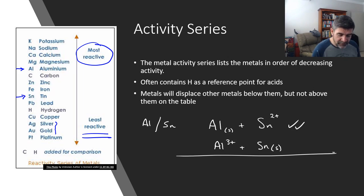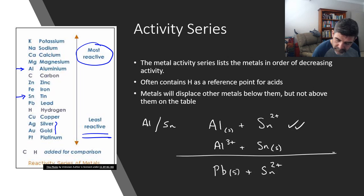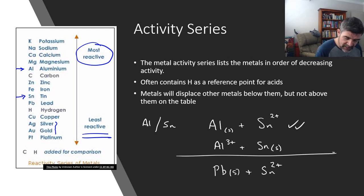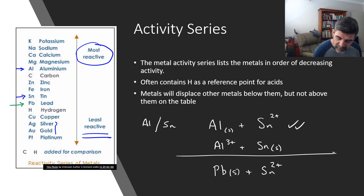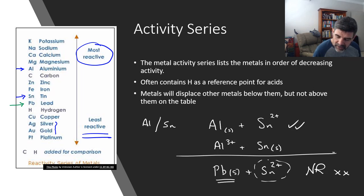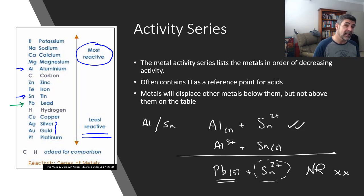However, if we were to place lead metal into a solution of tin, you will notice that the lead is actually sitting below tin on the table. So if we were to place the lead metal into a solution containing tin ions, there would be no reaction — the reaction would not occur. This is a non-spontaneous reaction; you wouldn't see anything happening. So our activity series allows us to make predictions about the spontaneity of different reactions just by looking at their position in the activity series.